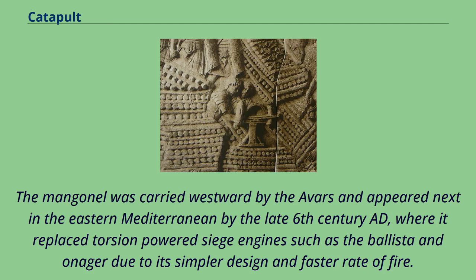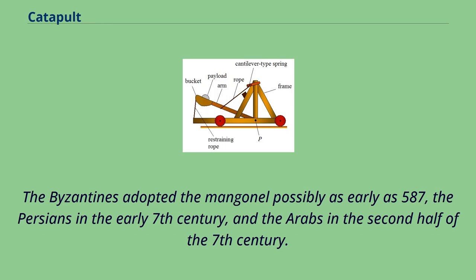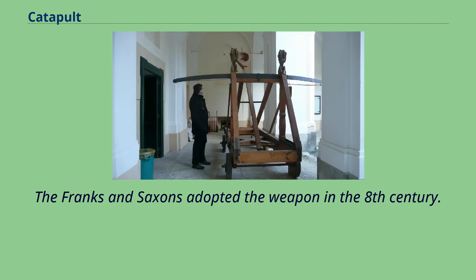The mangonel was carried westward by the Avars and appeared next in the eastern Mediterranean by the late 6th century AD, where it replaced torsion-powered siege engines such as the ballista and onager due to its simpler design and faster rate of fire. The Byzantines adopted the mangonel possibly as early as 587, the Persians in the early 7th century, and the Arabs in the second half of the 7th century. The Franks and Saxons adopted the weapon in the 8th century.